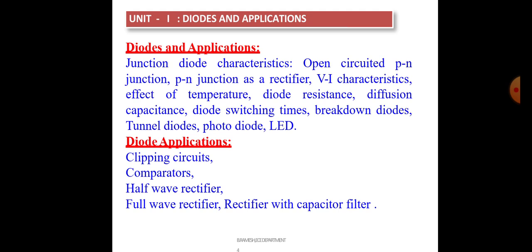Diode and Applications: first, what is a diode and what is the use of a diode, and how does this device function? Diode is a basic device. The word 'diode' means it has two electrodes — one is the anode and another is the cathode. This device is made with a combination of N-type and P-type materials. When you combine these two materials it forms a junction, that is called a P-N junction diode.